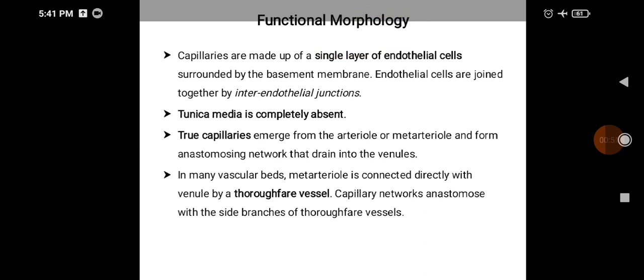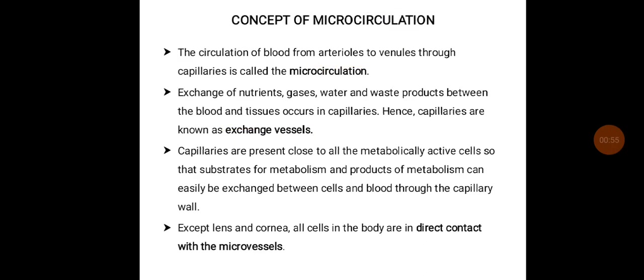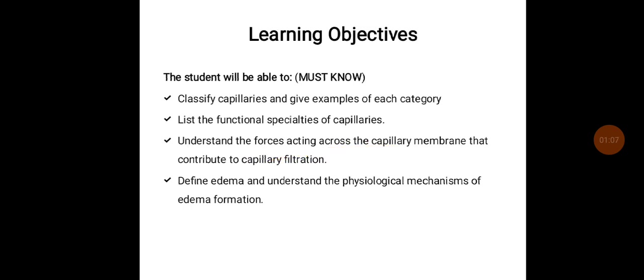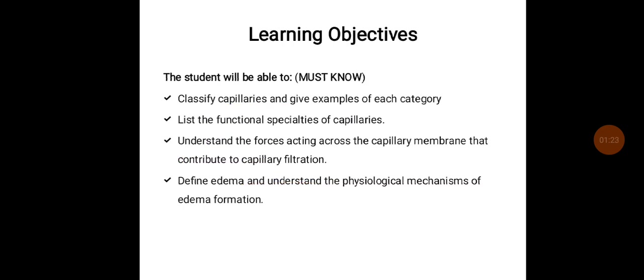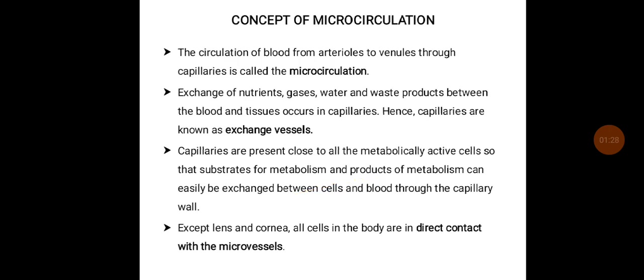Microcirculation is the blood flow from arteriole to venule through capillaries. Here exchange of nutrients, gases, water, and waste products occurs between the blood and the tissue, and hence capillaries are known as exchange vessels. Capillaries are present close to the metabolically active cells so that substrates for metabolism and products of metabolism can be easily exchanged between cells and through the capillary wall. Except for the lens and cornea, all the cells in the body are in direct contact with the microvessels.